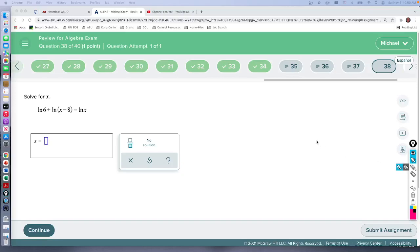Problem 38, another logarithm problem. Solve for x. This time we've got three logarithms. To really do logarithms, we have to get everything on the same side. I guess we don't have to, but it probably works out best.